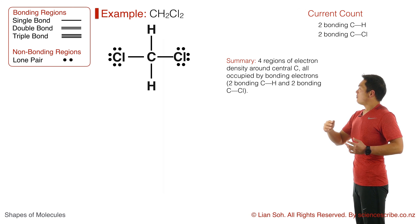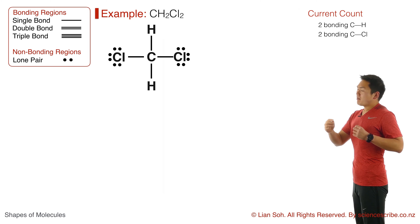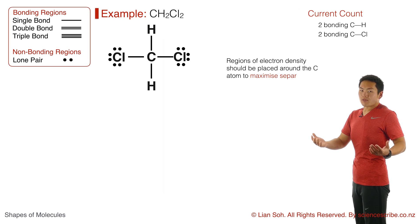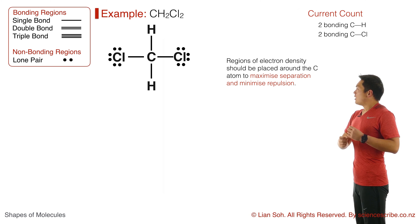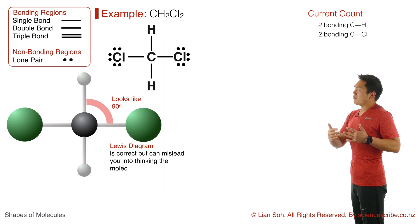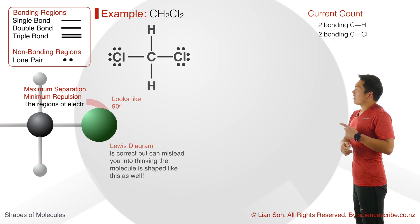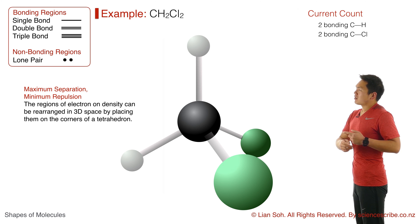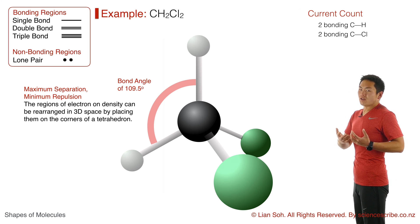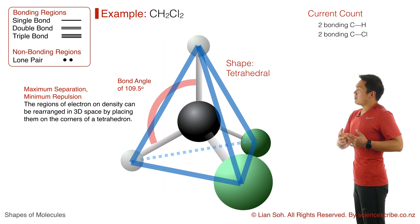All four regions are occupied by bonding pairs of electrons, and these bonding electrons should be placed in a way that gives maximum separation to minimize repulsion. When we think in 3D — rather than the flat 90-degree angles the Lewis diagram suggests — we actually end up with bond angles of about 109.5 degrees. The name of this shape resembles a tetrahedron from math, so we call it tetrahedral, not tetrahedron.